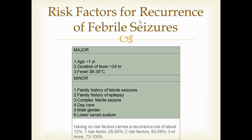Risk factors for recurrence of febrile seizures: The major risk factor is age — if the child is less than one year old, the younger the age, the more chances of getting second, third, or multiple attacks. If the first attack occurs with fever of less than 24 hours duration, or with mild fever of 38-39 degrees, the child is more likely to have recurrence of febrile seizures later in life.